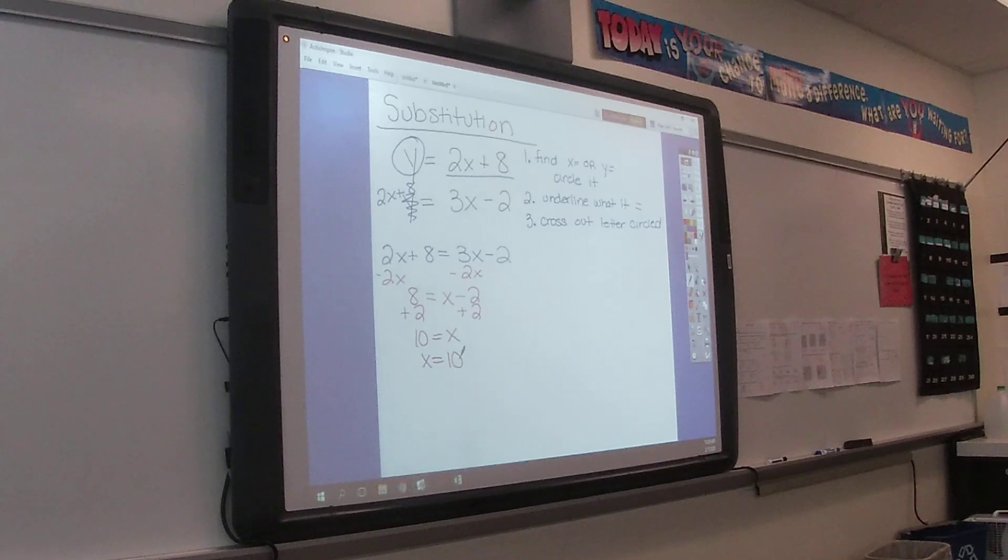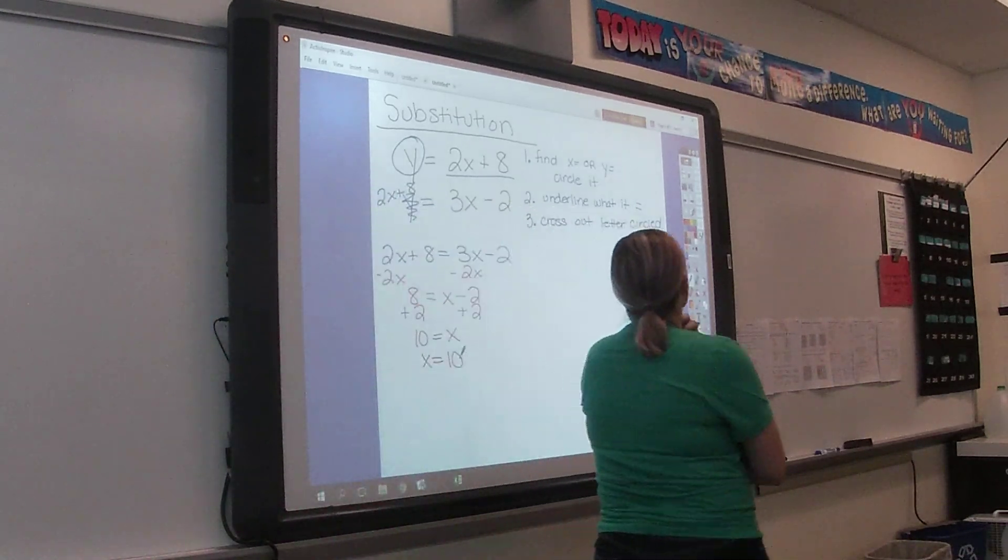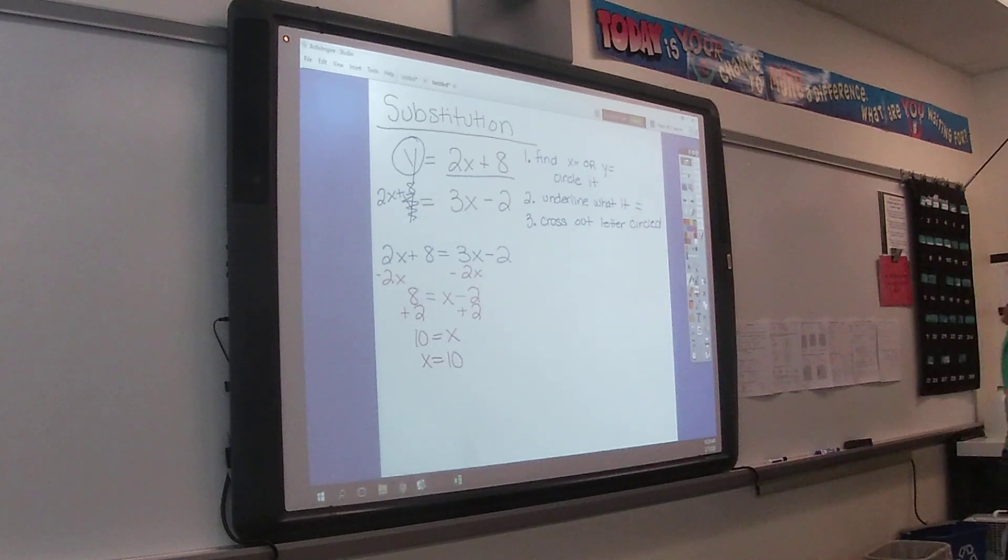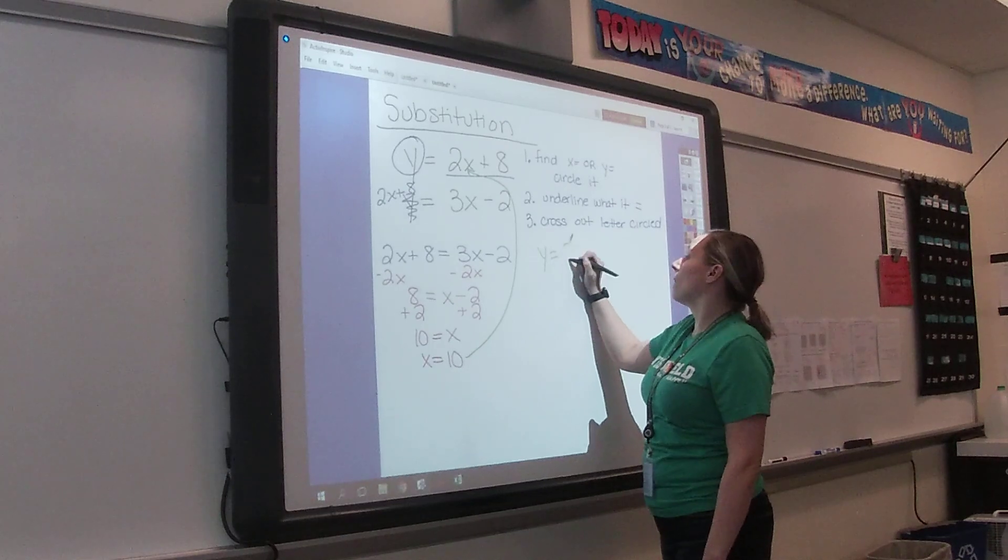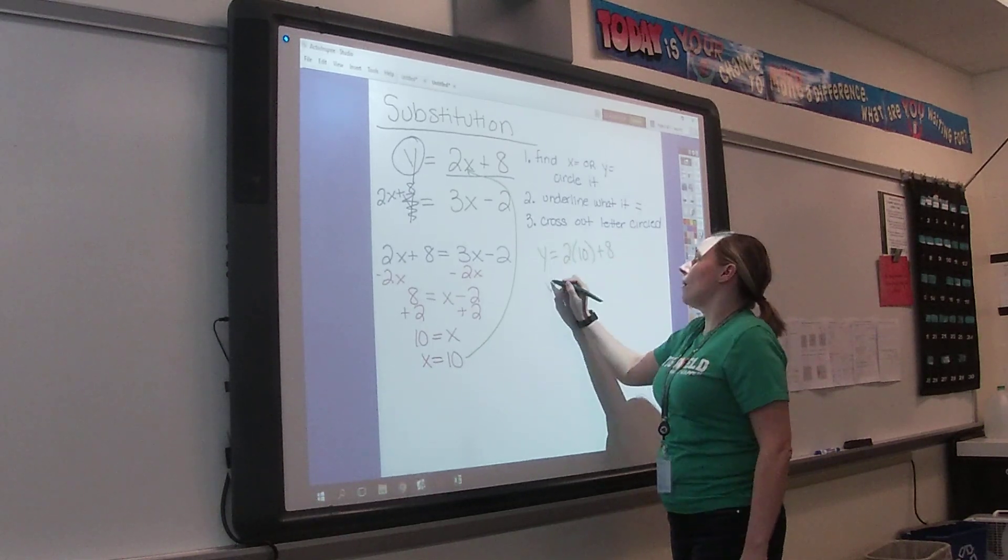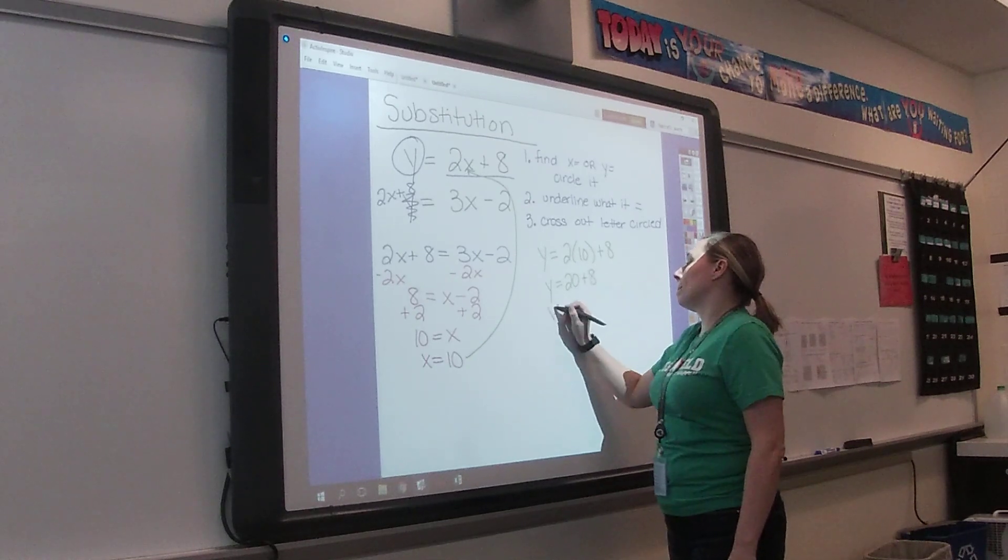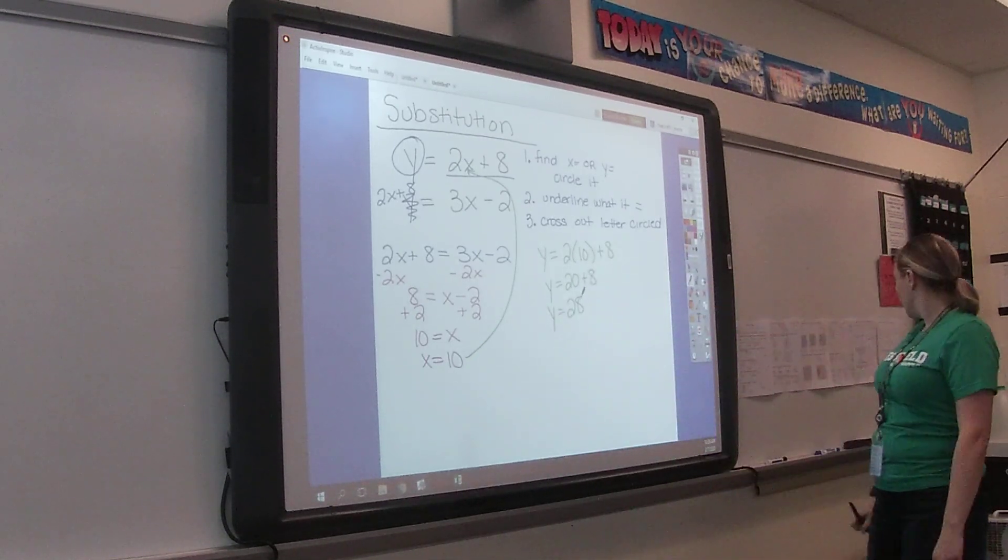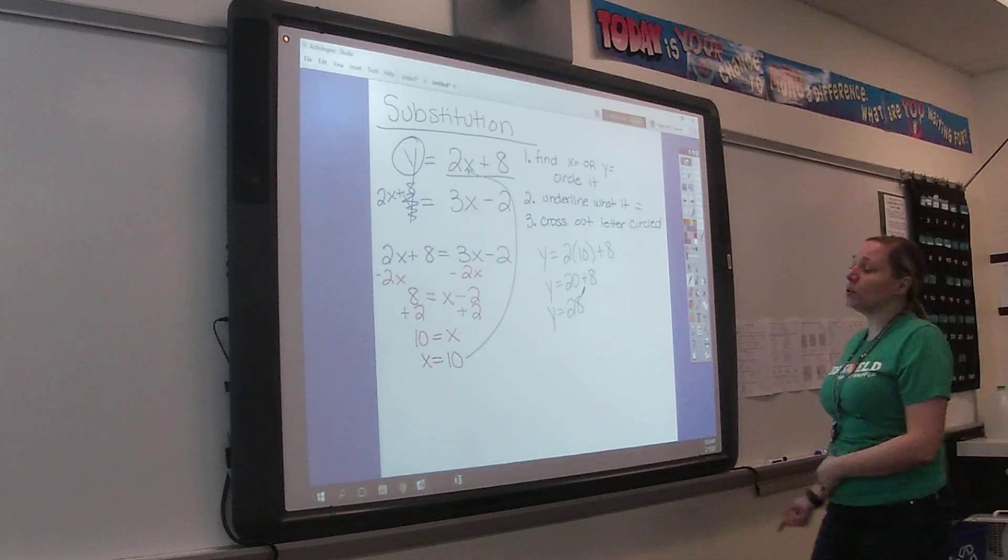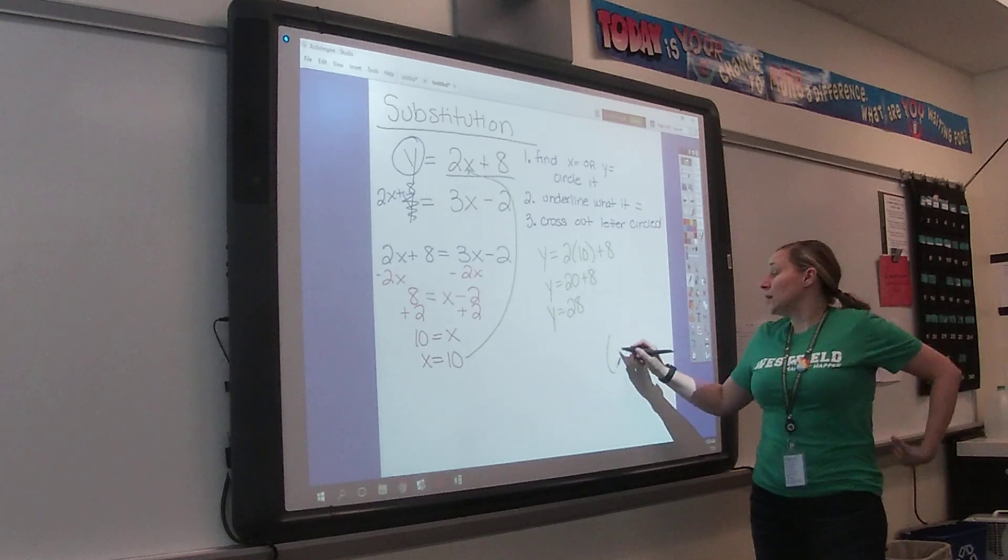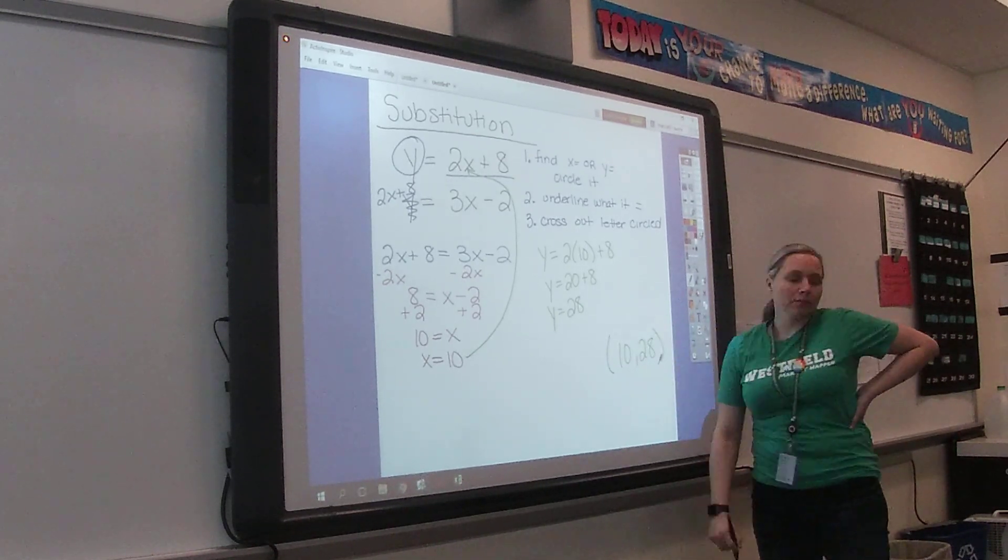Are we done with X equals 10? No. Why not? We have to plug it back in. We have to plug it back in because the answer to a system is the X and Y value that make both equations true. So we're going to plug this in. How would we see this answer in multiple choice? 10 comma 28. Ordered pair.